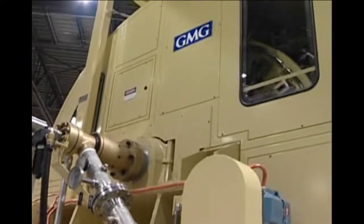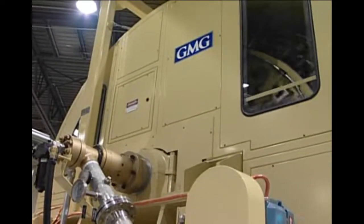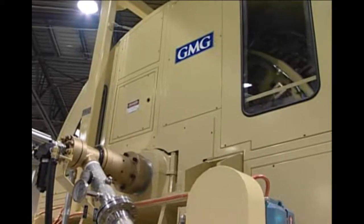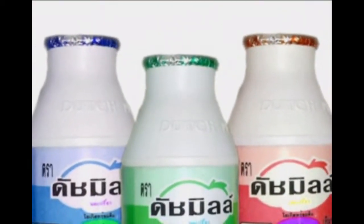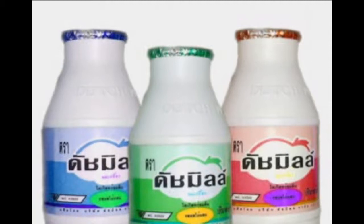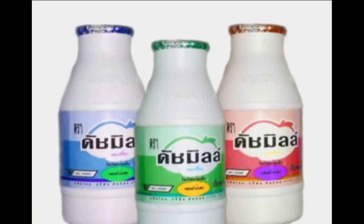Recently, GMG delivered two of their fastest ever rotary wheels to this fast growing market. Their fastest ever single parison rotary wheel produces this sterilized 1 liter milk bottle for a customer in France, while their fastest ever highest output dual parison machine produces this 100 milliliter container for a large dairy customer in Thailand.